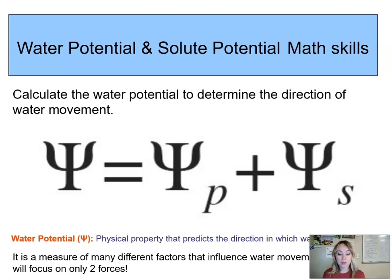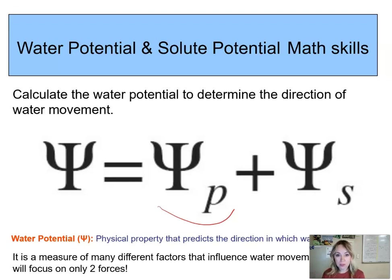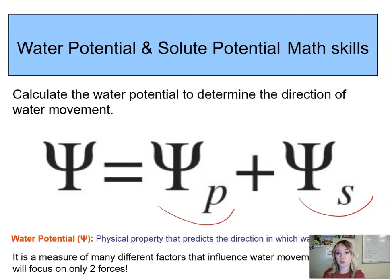The way we calculate water potential is by including the following factors — we have more factors, but we're going to look at only two: pressure potential and solute potential. When we add those two factors together, we will see how they influence water movement. In other words, we're going to be able to predict in which direction the water is going to move.